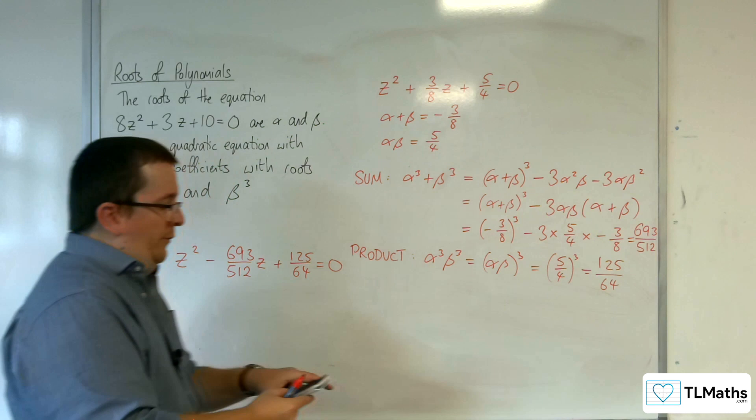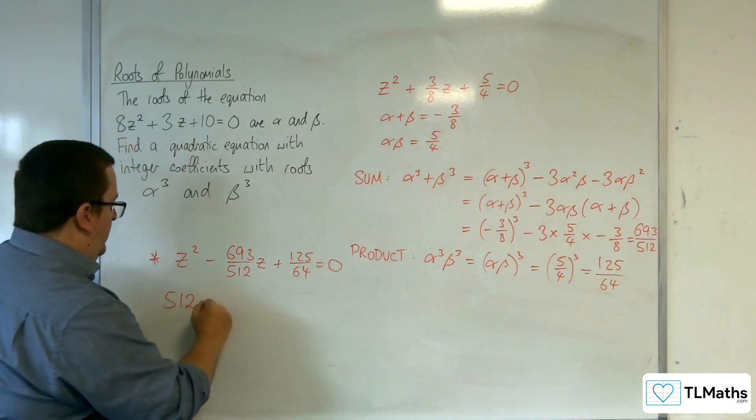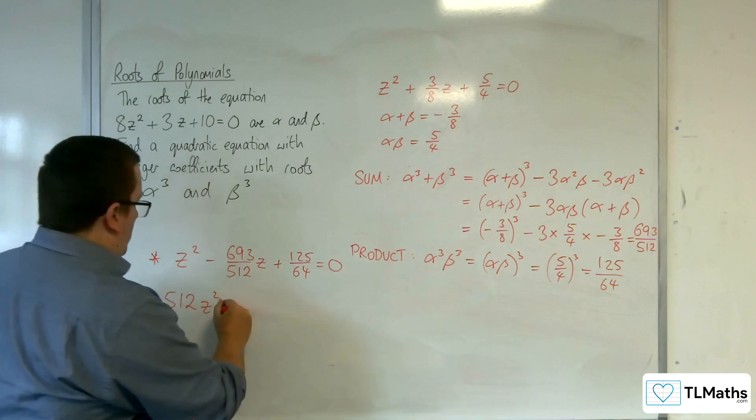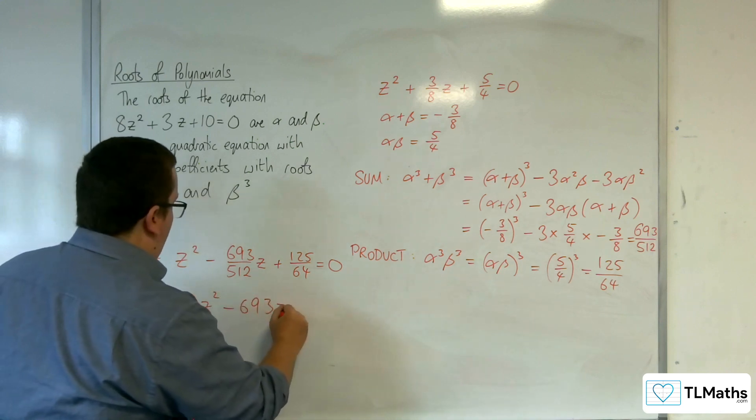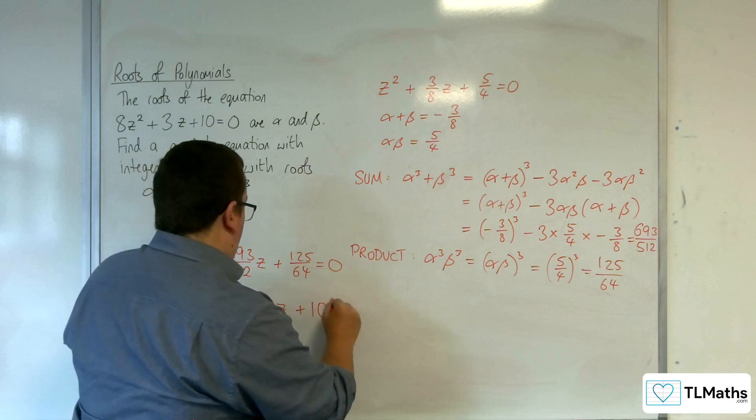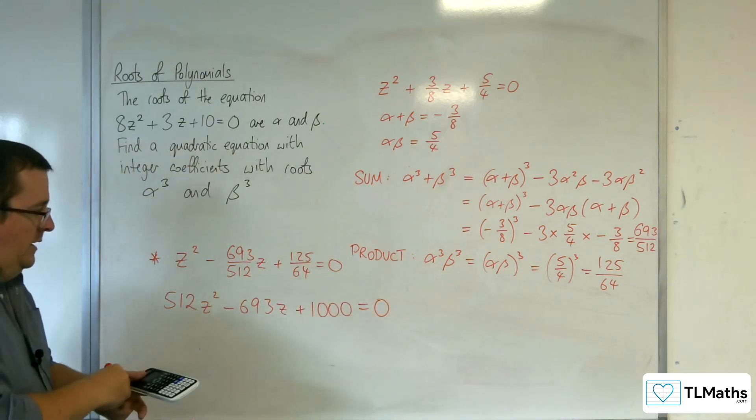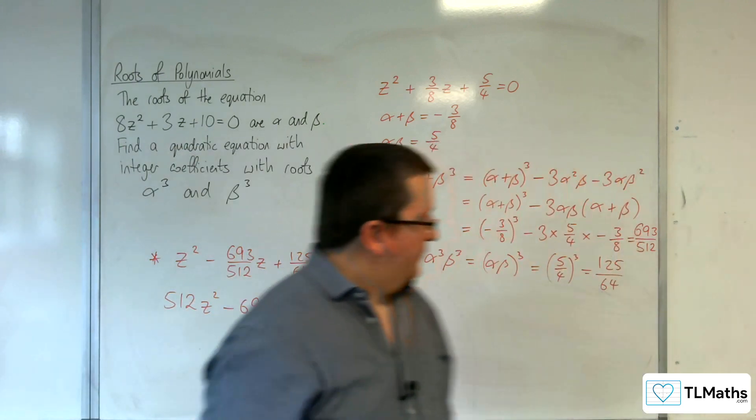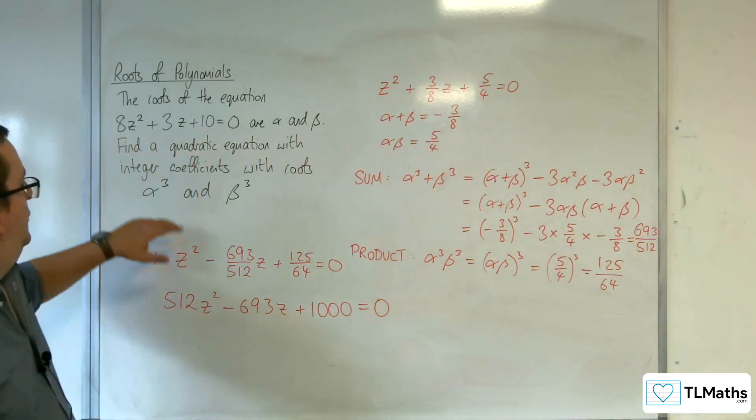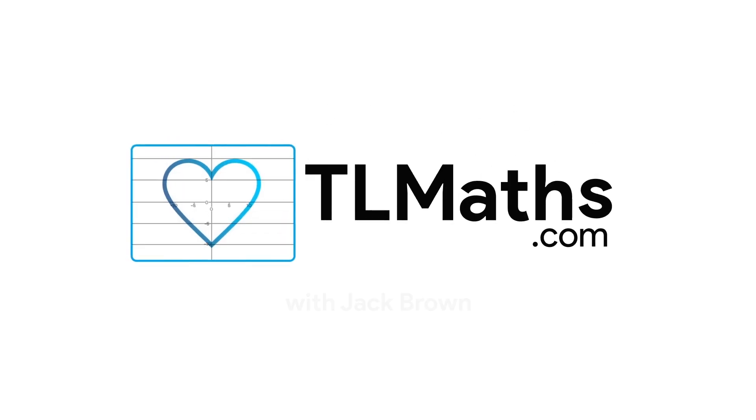Now I need integer coefficients, so I multiply through by 512. We get 512z² - 693z + 1000 = 0. And this is the quadratic equation that has roots α³ and β³.